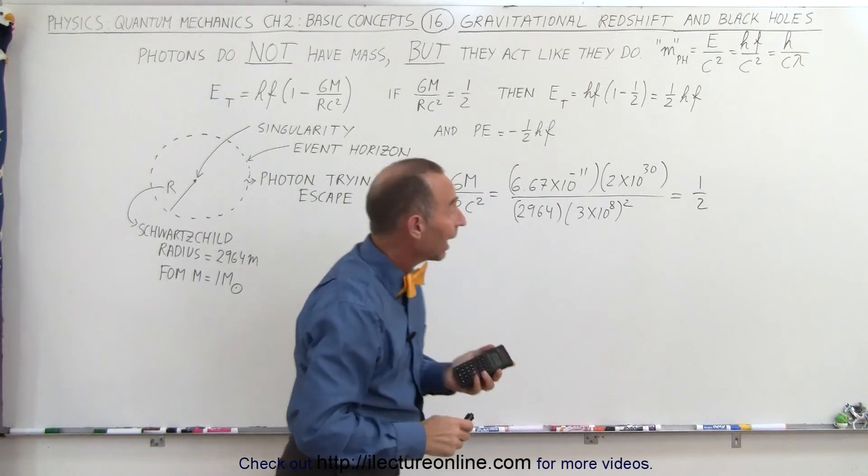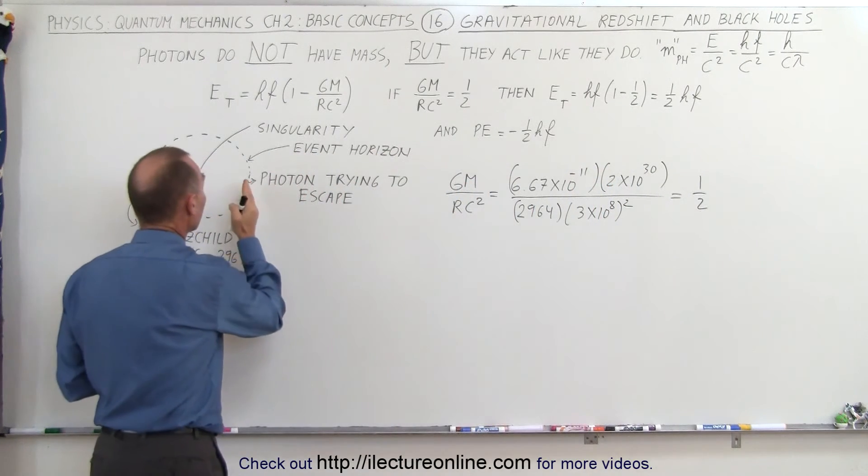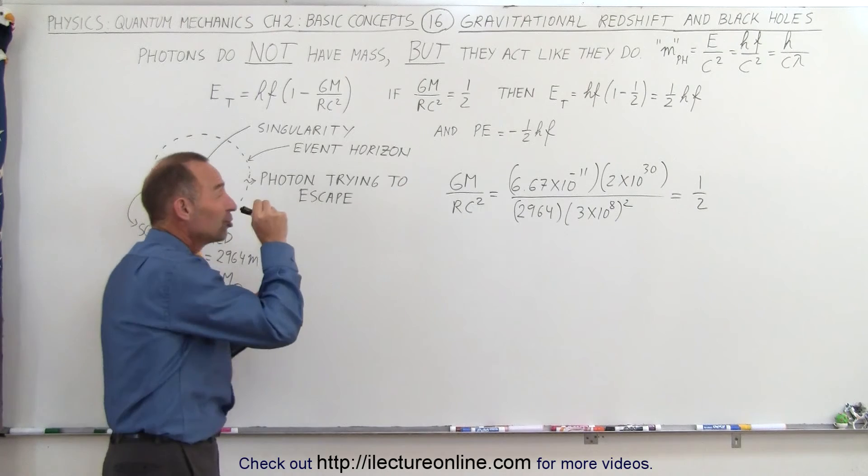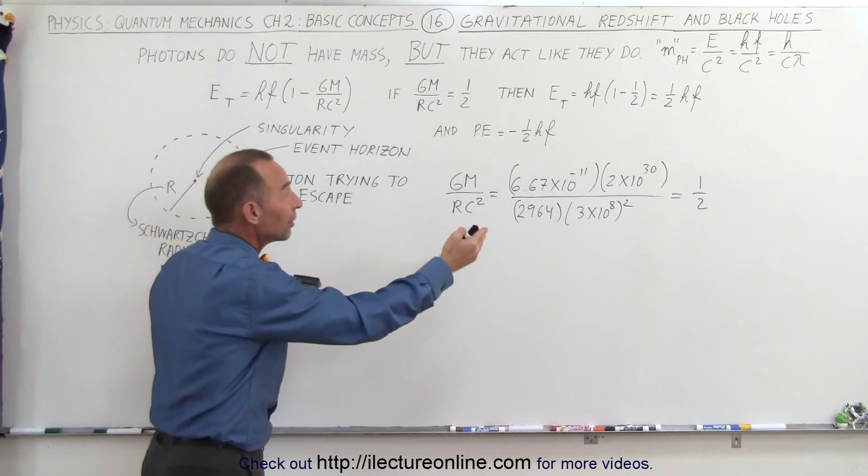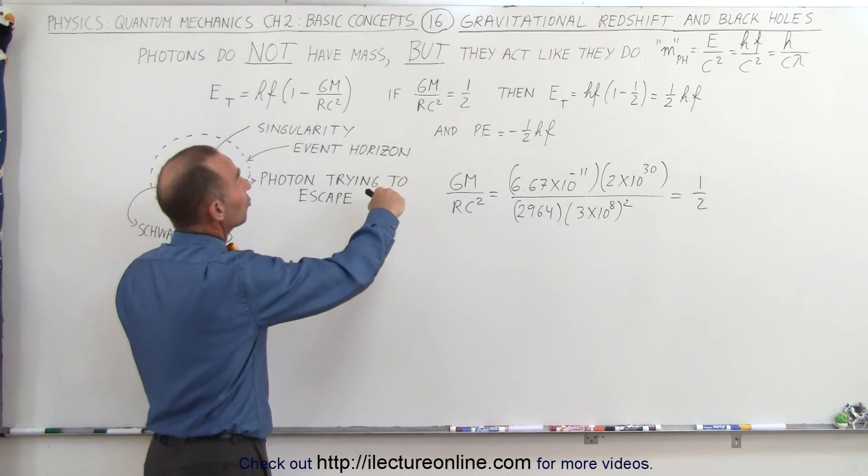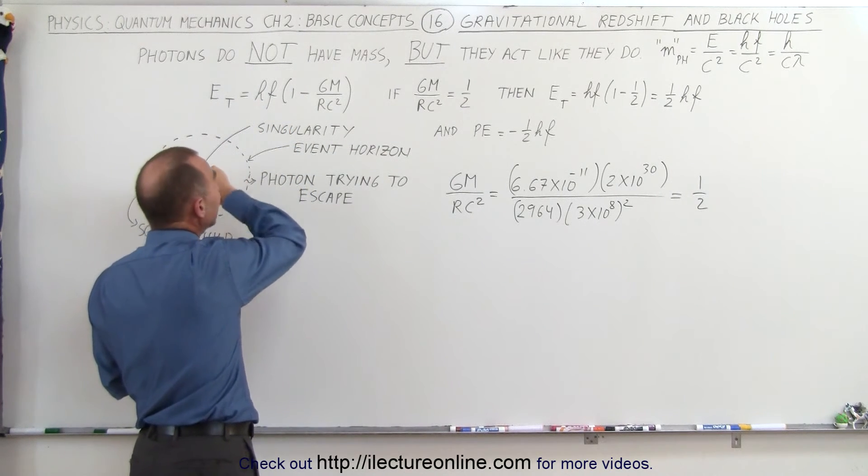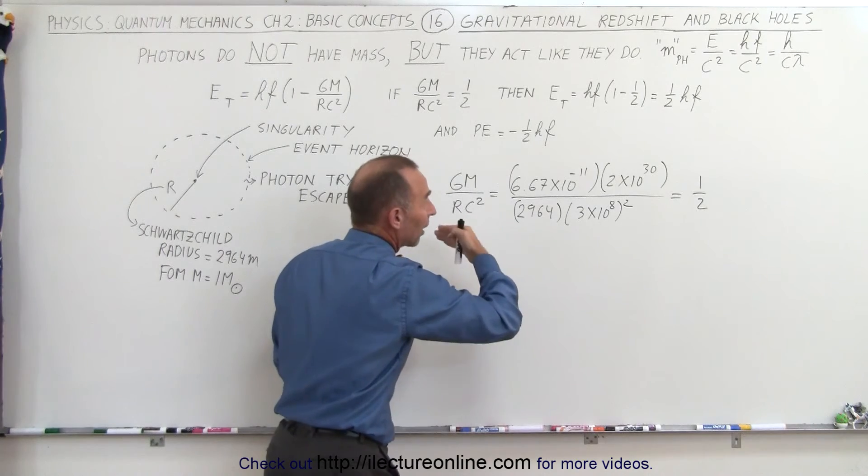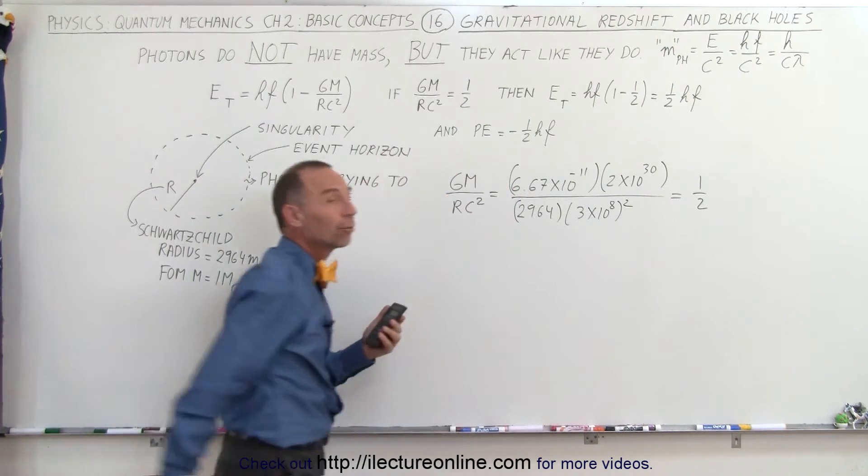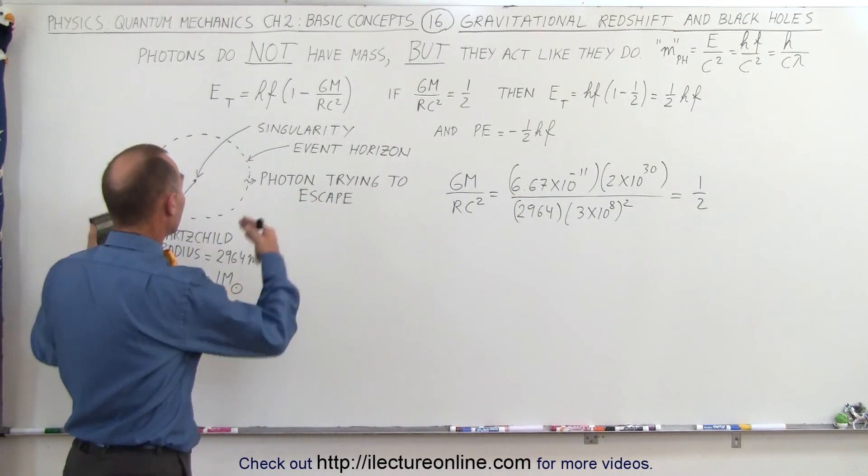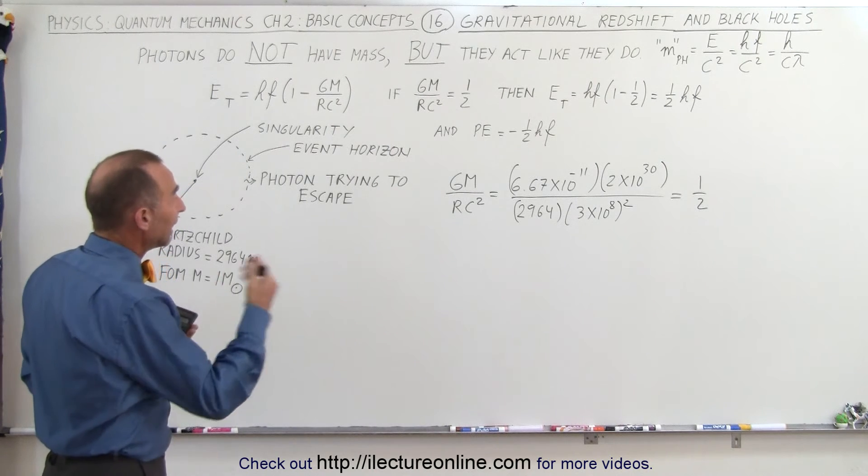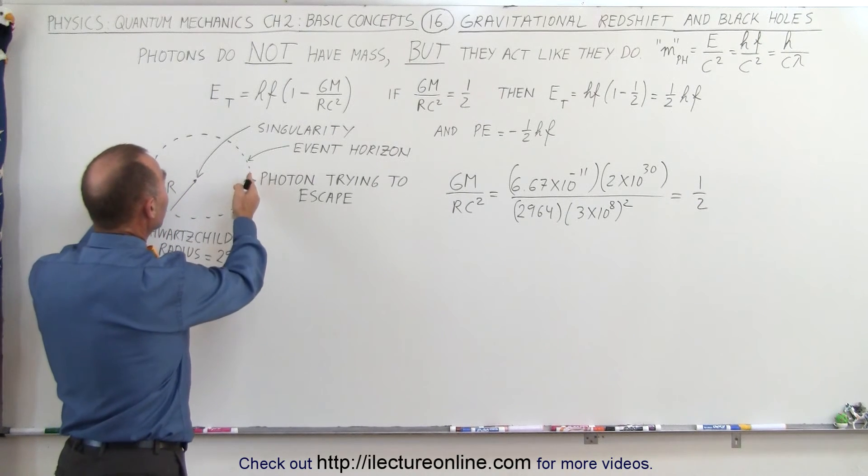That shows that a photon at the event horizon would have just enough energy to break free, because the other half of the total energy would be the energy of the photon. So when the energy of the photon equals the potential energy required to get away from that gravitational object or the gravitational force of the object, then you can see that the event horizon would be the limit.